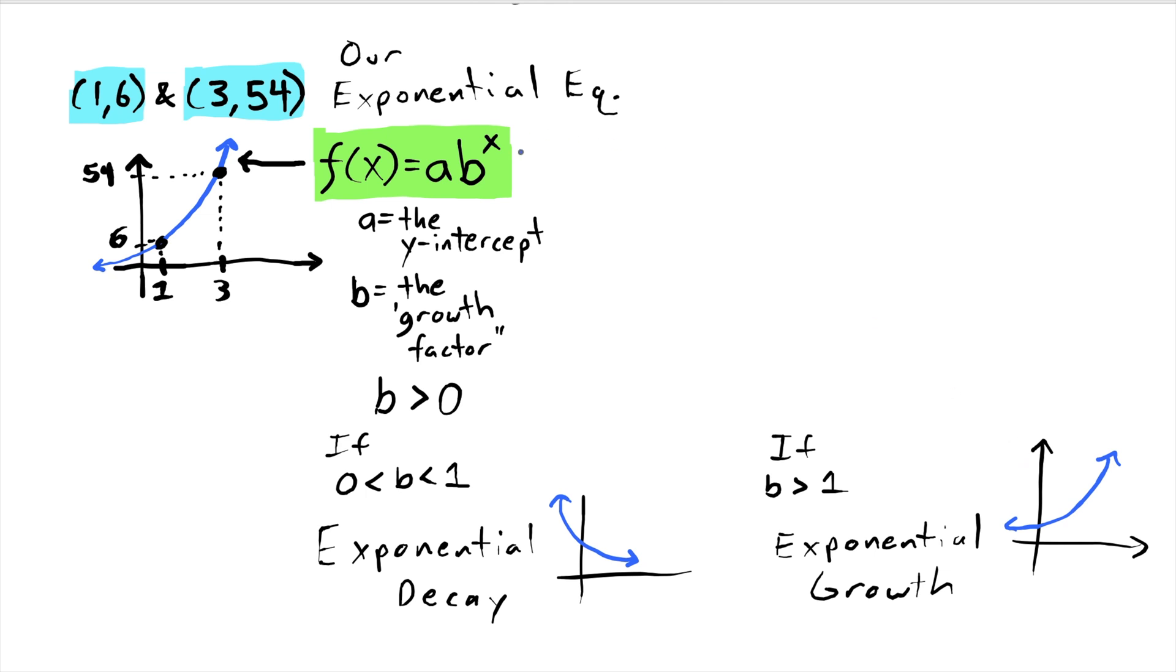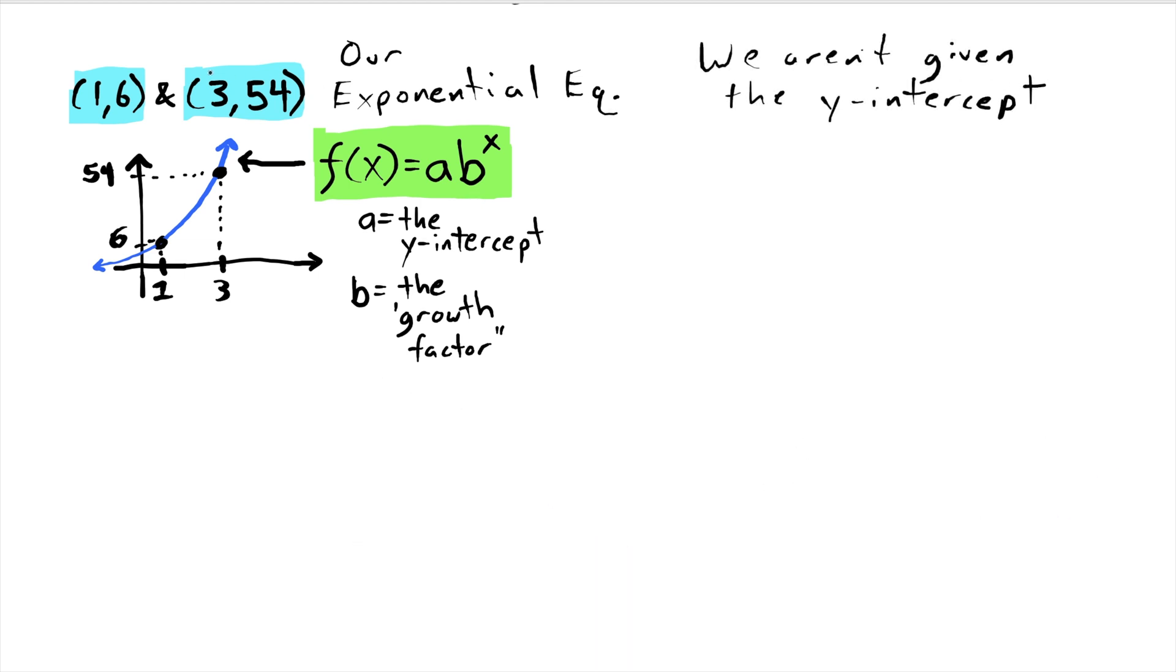So we expect for this problem our b value to be something bigger than 1. It's definitely worth noting at this point that of our two points here, neither one is the y-intercept. And that's going to make this slightly harder, because if you are given the y-intercept then you are given the value of a. For this particular problem we're going to have to find both a and b. We're going to find b first, and once we know what b is, we're going to figure out what a is.